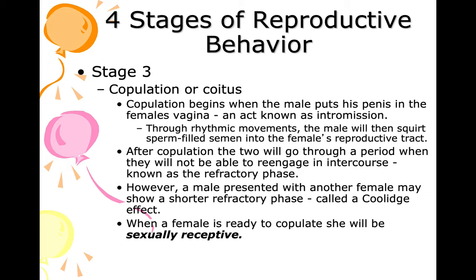After copulation, the two go through a refractory phase when they cannot re-engage in intercourse. However, a male presented with another female will show a shorter refractory phase. This is called the Coolidge effect, and that's what was happening with the male baboon — since he was being approached by other females, he was able to reproduce with the second, third, fourth, and fifth female.